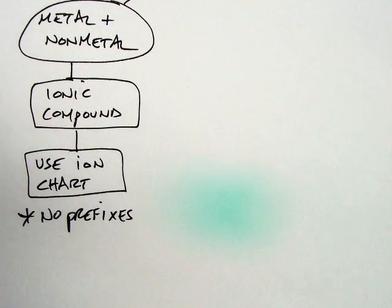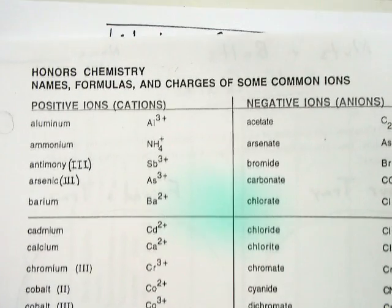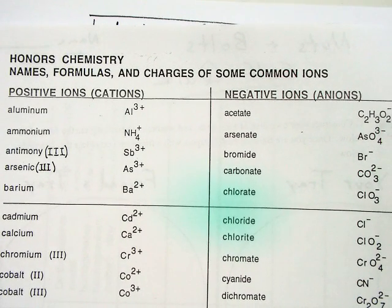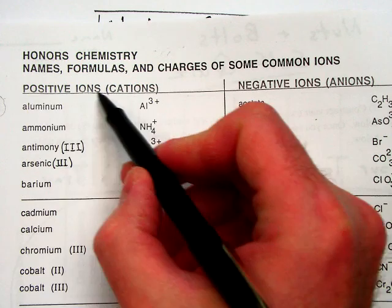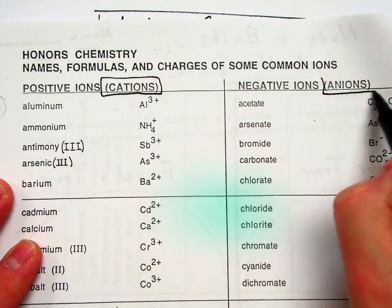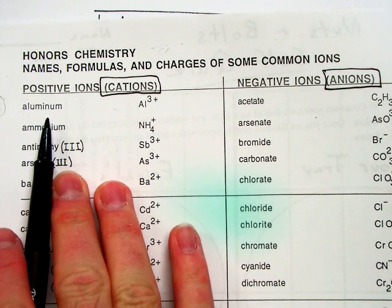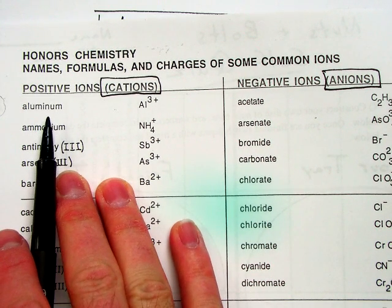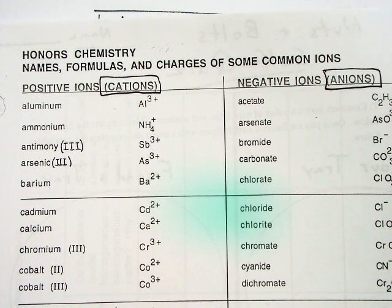So your ion chart has the most common formulas and names of some different ions. It doesn't have all of them, but it has the most common ones. On the left-hand side, you have your positive ions, which are called your cations. And then on the right-hand side, you have your negative ions, which are called anions. And the way formulas are written is that the positive one comes first and is on the left, and on the right, what comes second, is your negative ions. So all you need to do is kind of put together what their names are.